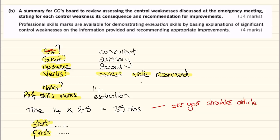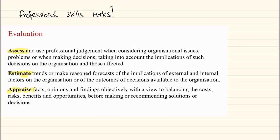Further information about how I calculate two and a half minutes per mark is available in the 'Over Your Shoulder' article on the examiner guidance on the ACCA website. I write down start and finish and make sure that 35 minutes after I start, I know exactly when I have to stop. Professional skills marks here are for evaluation — thinking of assessing, estimating, and appraising. So I'm looking at the information to hand, considering it, and making a recommended solution.